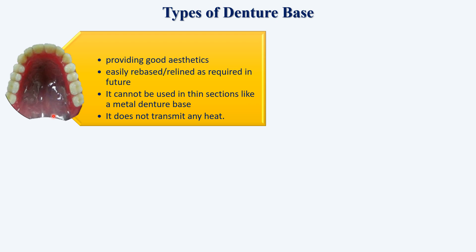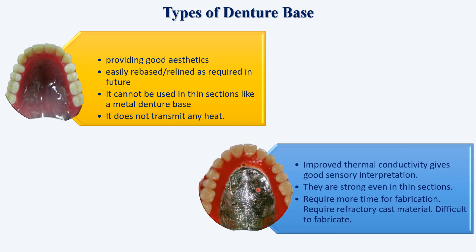Another disadvantage of acrylic is it does not transmit heat — the patient won't know how hot their food is. The next type is the metal-based denture base. Metal is a good conductor of heat, so it has improved thermal conductivity and gives better sensory interpretation for the patient. Metal is strong even in thin sections. However, it requires more time for fabrication and requires refractory cast materials which are difficult to fabricate.